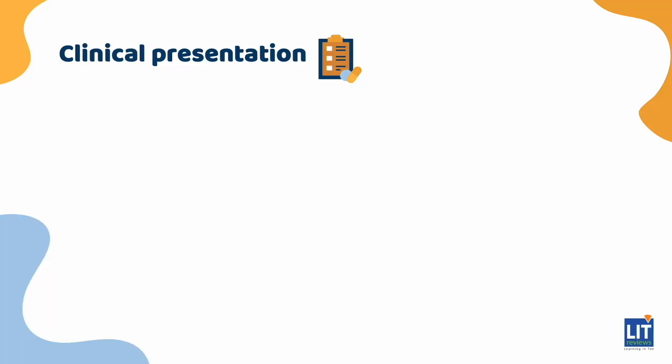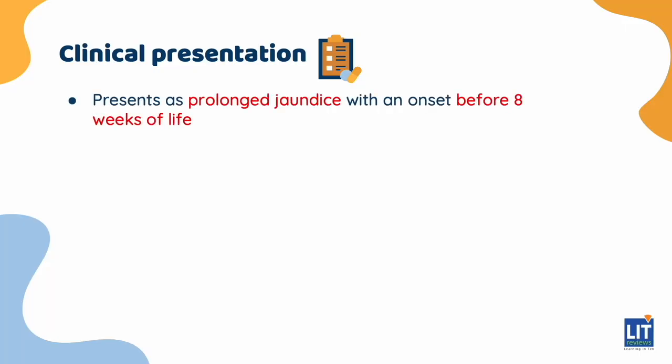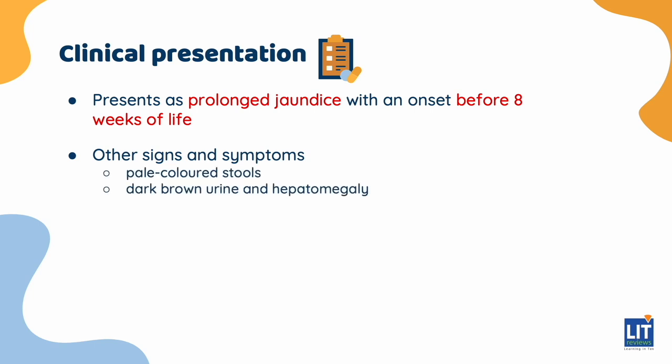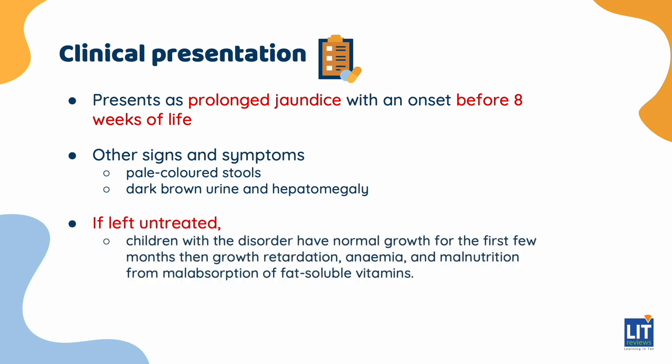Biliary atresia usually presents as prolonged jaundice with an onset before 8 weeks of life. If a child presents with jaundice starting only after 8 weeks of age, other differentials should be considered. Other signs and symptoms include pale-coloured stools, dark brown urine, and hepatomegaly. If left untreated, children have normal growth for the first few months, then develop growth retardation, anemia, and malnutrition from malabsorption of fat-soluble vitamins.